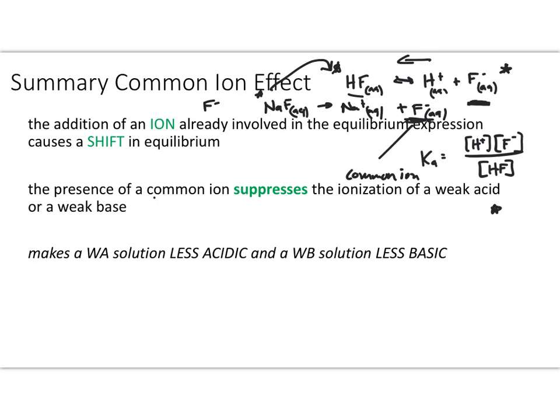If we add a common ion, it's going to suppress the ionization of weak acids or weak bases. If it suppresses the ionization of a weak acid, the solution will be less acidic. If it suppresses the ionization of a weak base, that solution will become less basic. The common ion effect is the addition of an ion that shows up in the equilibrium expression, causing a shift back towards reactants and subsequently decreasing the acidity or basicity of the solutions, respectively.